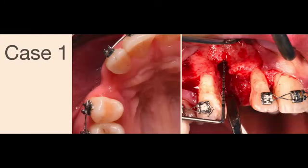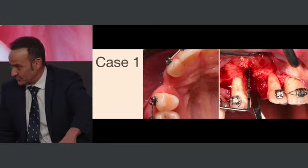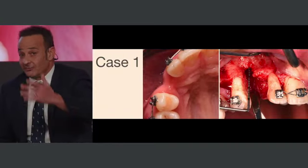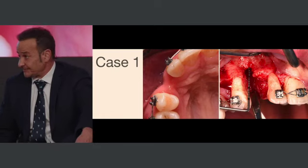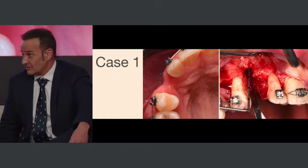Inside the alveolus I will prefer to use allograft; outside I will use a xenograft to maintain the volume. When we use xenograft, we are not doing a bone regeneration procedure — we are compensating. This is fine because we are in the static area, where we are looking for compensation, not bone regeneration. Yes, that's what I will do. I could also place an immediate implant here. So, Algirdas, would you have a different approach?